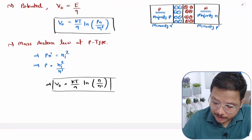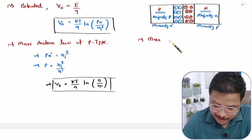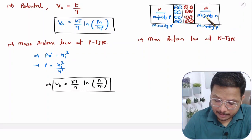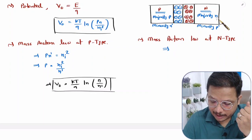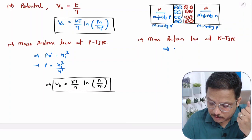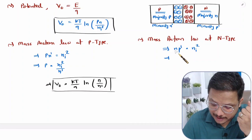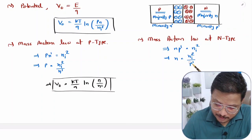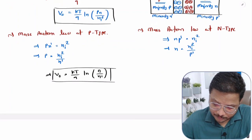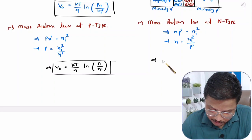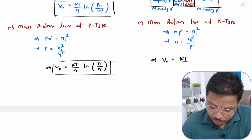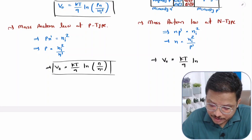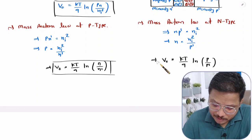Now applying mass action law at the N-type side: N × P' = Ni², so N = Ni² / P'. Substituting into the cutting voltage formula, Ni² cancels out, giving V0 = (KT/Q) · ln(P / P'), where P is majority holes in P-type and P' is minority holes in N-type.